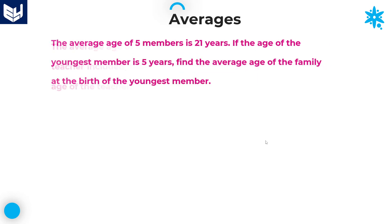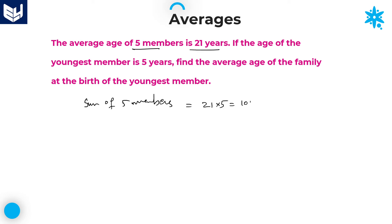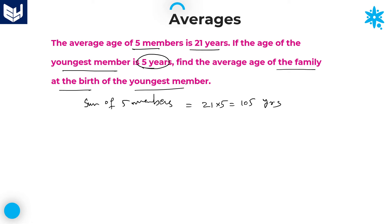Let's move on to the next question. The average age of 5 members is 21 years. So sum of 5 members equals 21 into 5, which is equal to 105 years. If the age of the youngest member is 5 years, find the average age of the family at the time of birth of the youngest member.